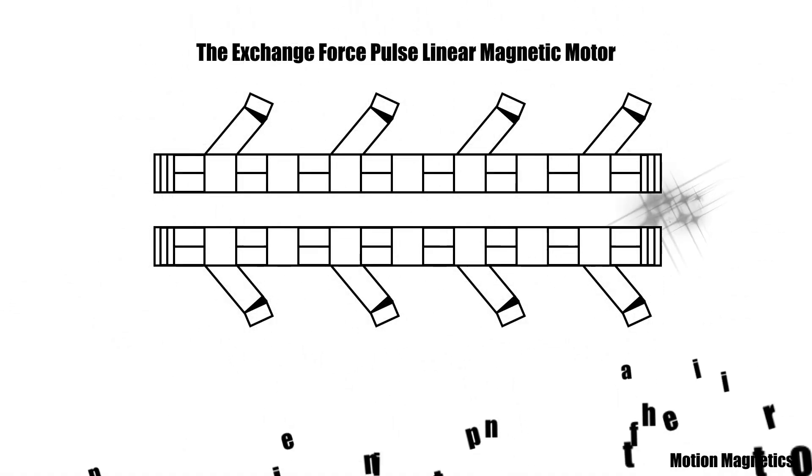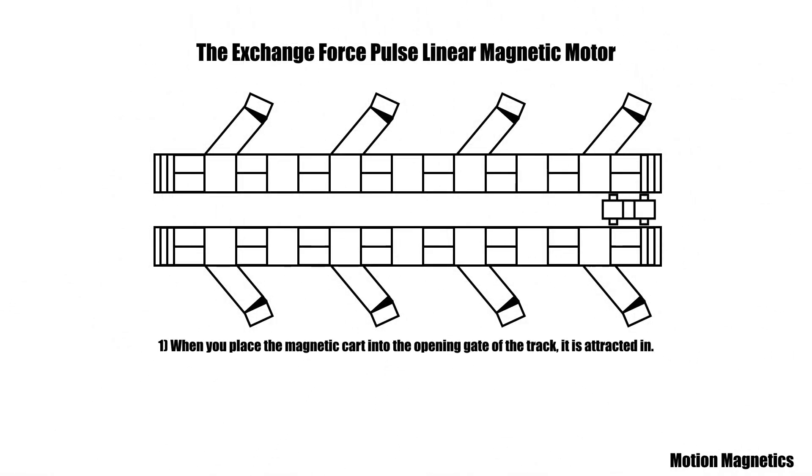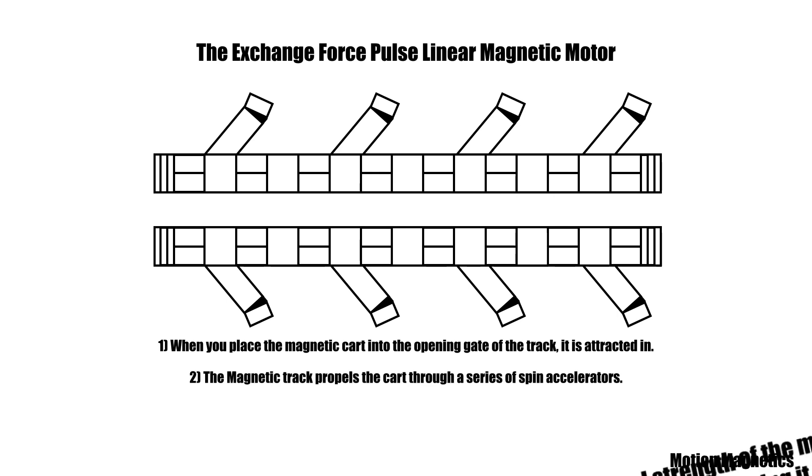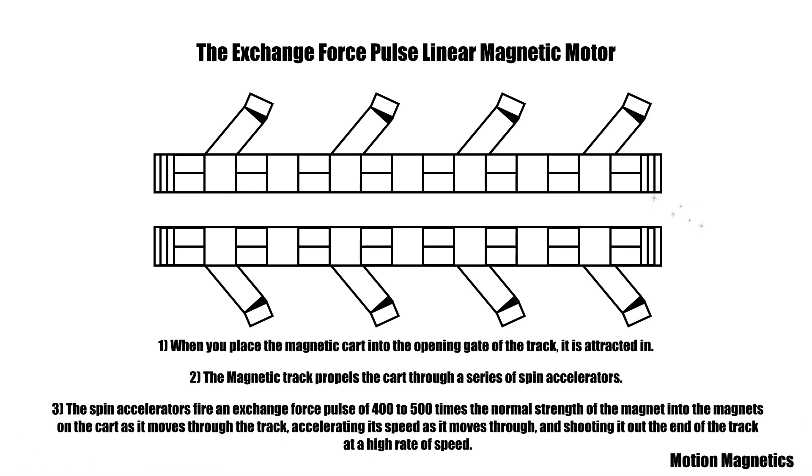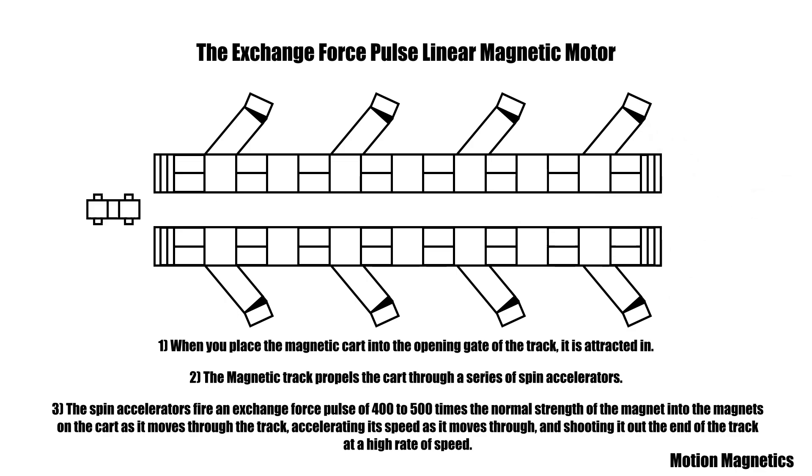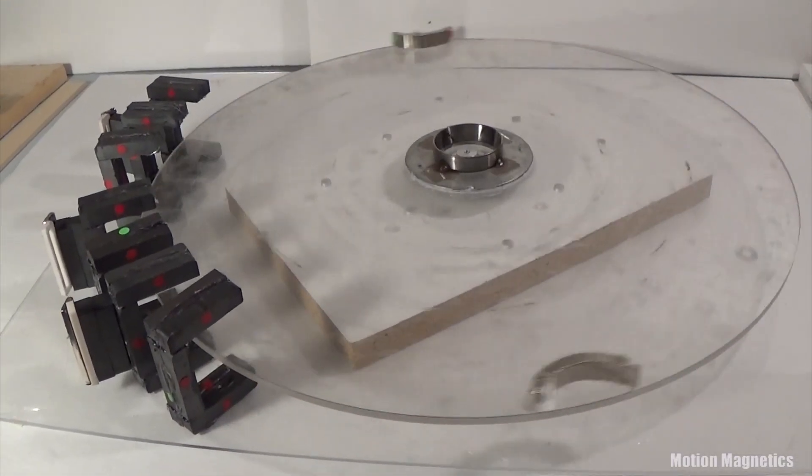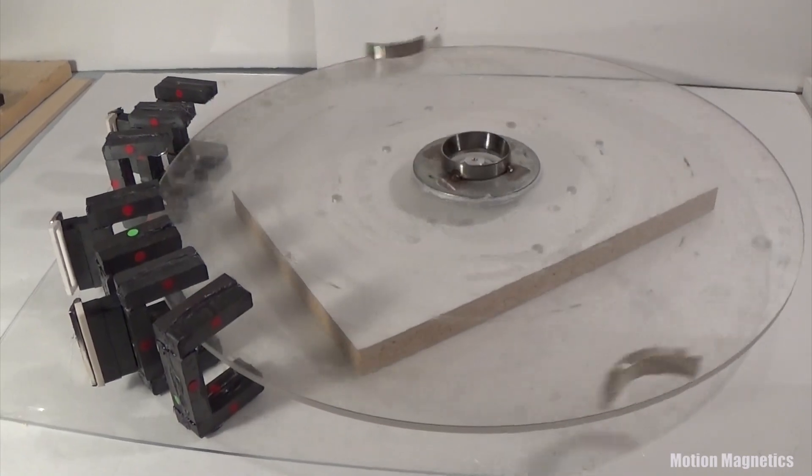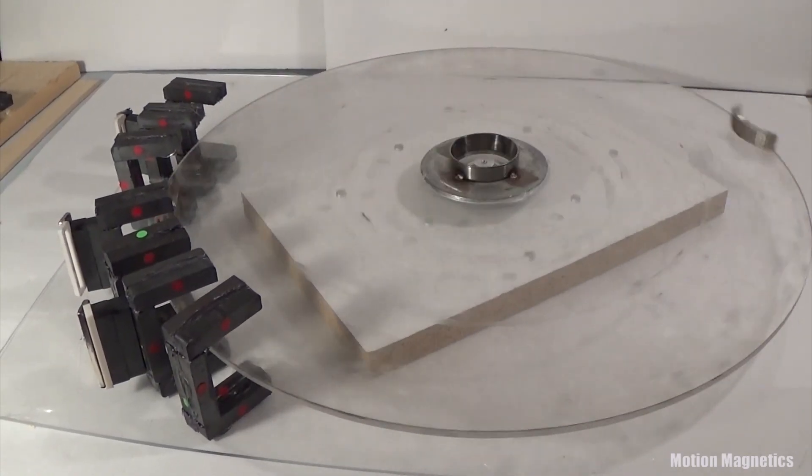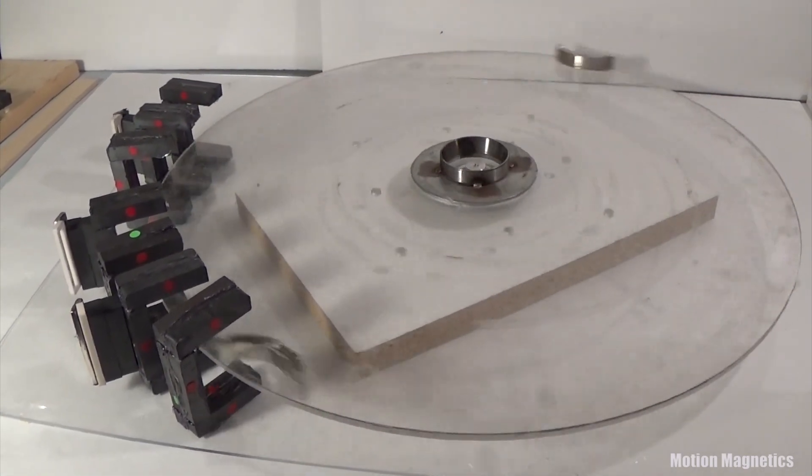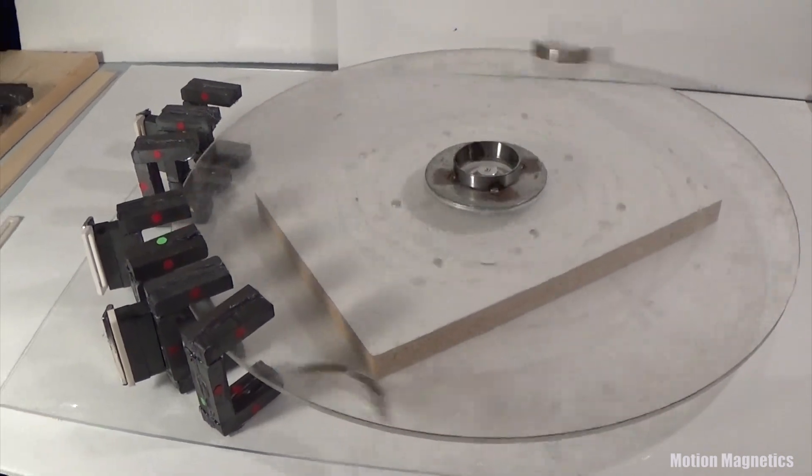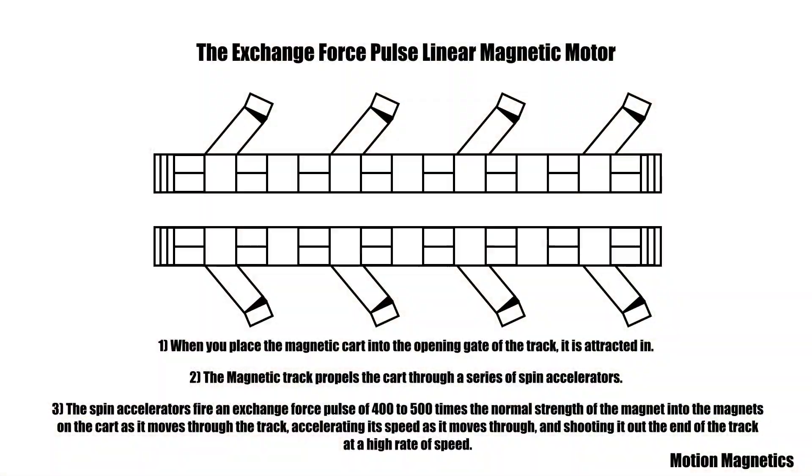The exchange force pulse linear magnetic motor. One: when you place the magnetic cart into the opening gate of the track it is attracted in. Number two: the magnetic track propels the cart through a series of spin accelerators. Three: the spin accelerators fire an exchange force pulse of 400 to 500 times the normal strength of the magnet into the magnets on the cart as it moves through the track, accelerating its speed and shooting it out the end at a high rate of speed.